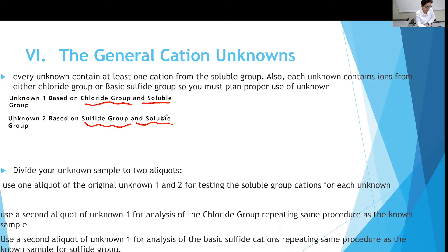Since you have the soluble group, the first thing you want to do for each unknown is separate into two aliquots. Use aliquot one — either unknown one or unknown two — for the soluble group, which is the flame test, and then test with sodium hydroxide for the ammonium ion. You don't want to mix this with sodium hydroxide or any other reagents before separating it.